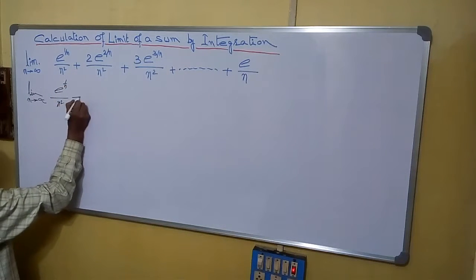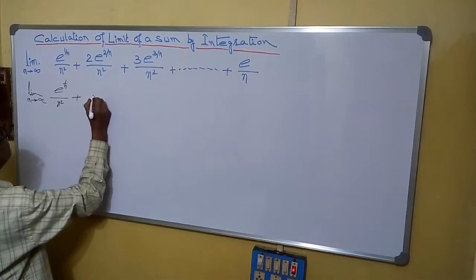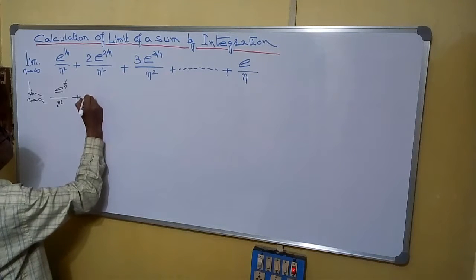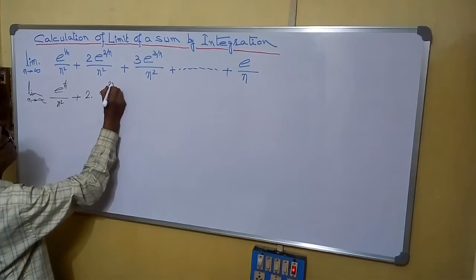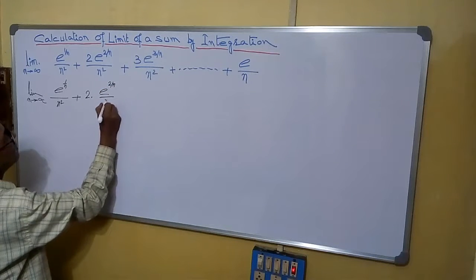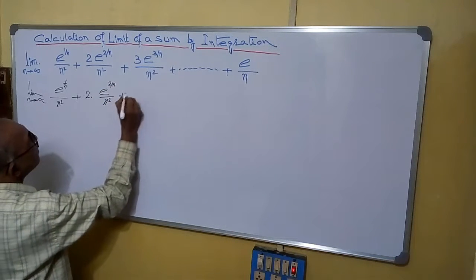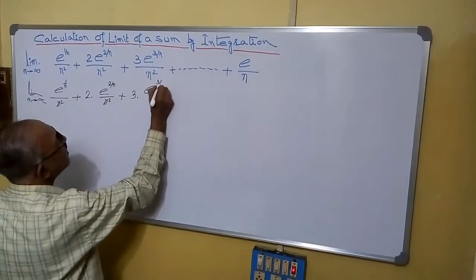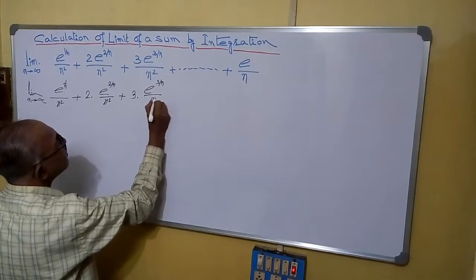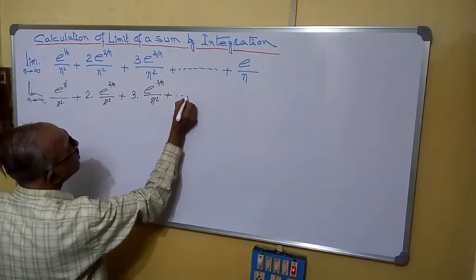...plus 2·e^(2/n)/n^2, plus 3·e^(3/n)/n^2. And in this way it is going on.